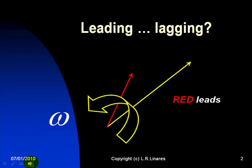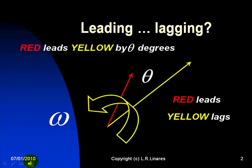And that is what we say. We say in this case, red leads, or what is equivalent, we say that the yellow phasor is lagging. By leading by how much or lagging by how much? Well, leading or lagging by that angle, theta degrees or theta radians.